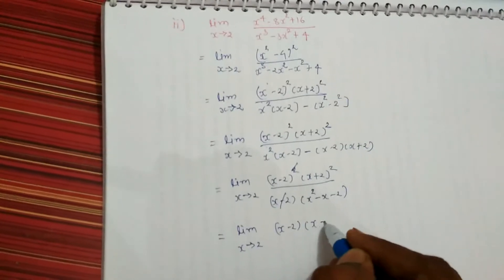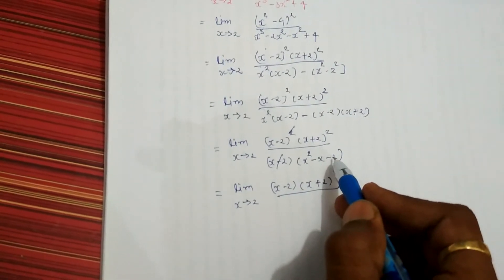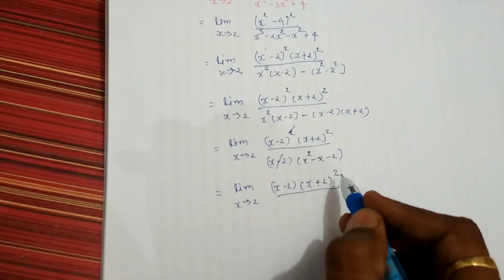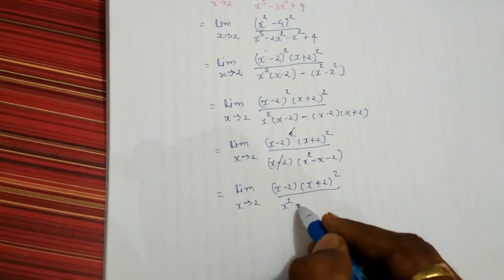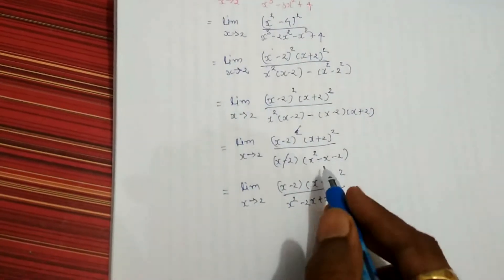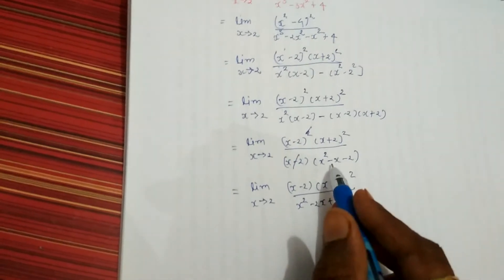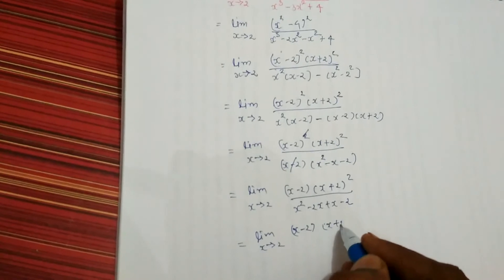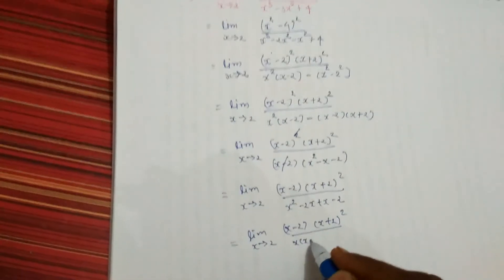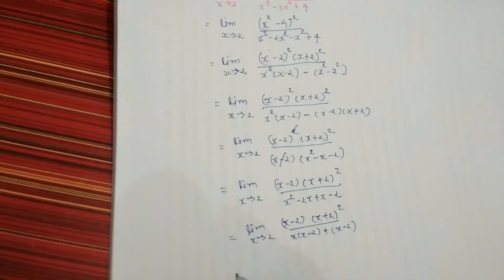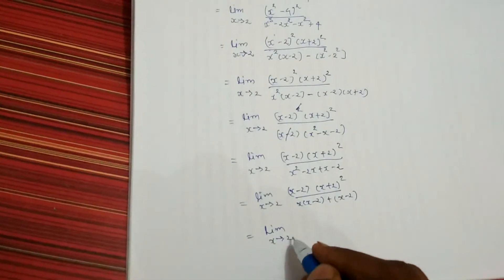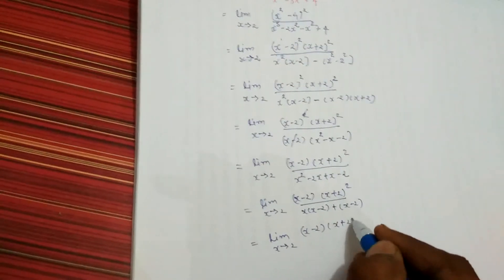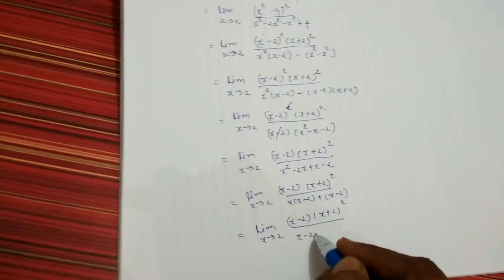The remaining term is x plus 2 whole square. Now you need to take factors of minus 2 such that their subtraction would be minus 1 — so 2 ones are 2, right? So x square minus 2x plus x minus 2. The factors will give minus 2x and plus x that will make minus x. So it will be limit x tends to 2: x minus 2 times x plus 2 whole square, with x common giving x minus 2, plus 1 common giving x minus 2. So x minus 2 and x minus 2 will get cancelled out, and the remaining term is x plus 1.